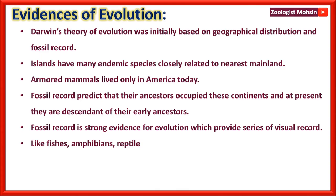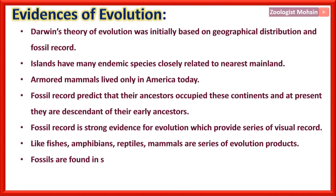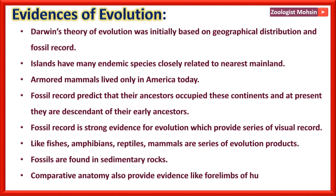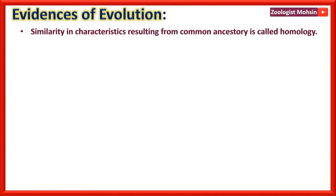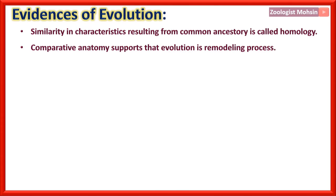Fishes, amphibians, reptiles, and mammals are a series of evolutionary products. Fossils are found in sedimentary rocks — very important. Comparative anatomy also provides evidence: forelimbs of humans, cats, and whales are similar. Similarity in characteristics resulting from common ancestry is called homology. Comparative anatomy supports that evolution is a remodeling process.